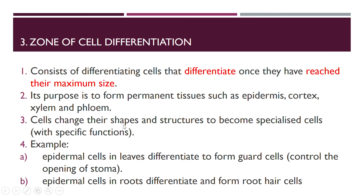Cells change their shapes and structures — they become specialized with specific functions. For example, epidermal cells in leaves differentiate to form guard cells that control the opening and closing of stomata. Also, epidermal cells in the roots are modified — as mentioned in the previous lesson, root hair cells are examples of modified epidermal cells.